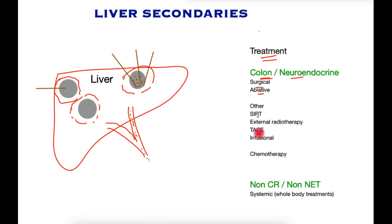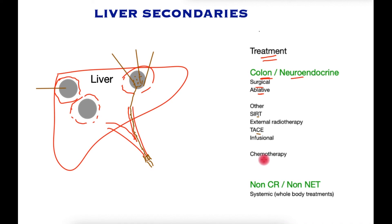Sometimes cancers are also treated by infusing chemotherapy-laden particles through the artery, blocking the artery but also infusing it with chemotherapy. The whole liver may also be treated with infusional chemotherapy, with a catheter placed in the main artery supplying the liver. Finally, chemotherapy or its variants may be deployed along with these therapies or on its own.